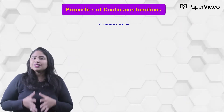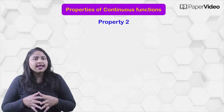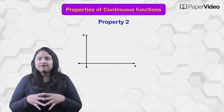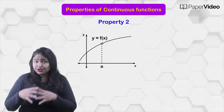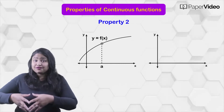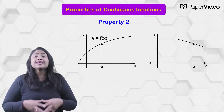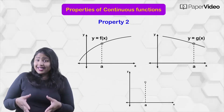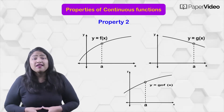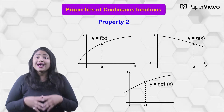According to the second property, if f is a function continuous at a and g is another function continuous at f of a, then g of f is continuous at a.